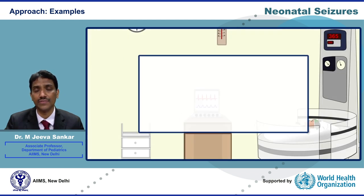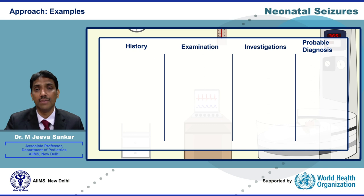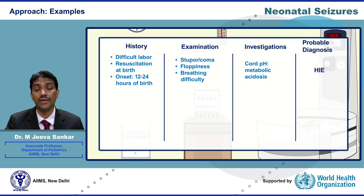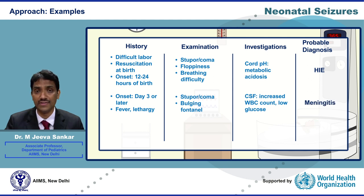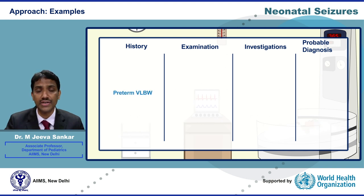Let us see some typical presentations of common etiologies of neonatal seizures. A neonate who required resuscitation at birth and manifests seizures within 12 to 24 hours of life, who is stuporous and floppy on examination, is likely to have hypoxic ischemic encephalopathy. A neonate with fever, stupor, bulging anterior fontanel, and CSF pleocytosis likely has meningitis. An IUGR neonate with poor feeding, jitteriness, and low blood sugar has hypoglycemia, while a preterm very low birth weight neonate with sudden deterioration on day two or three is likely to have severe intraventricular hemorrhage.